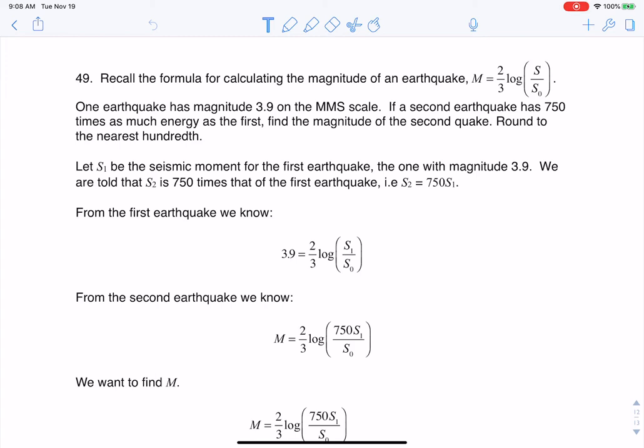Hey, Math 31. I had a question on section 6.7, number 49. Here we're asked to look at the earthquake magnitude formula again, and we're told that one earthquake has a magnitude of 3.9, and then we're told that a second earthquake has 750 times as much energy as the first earthquake, and can we find that magnitude?